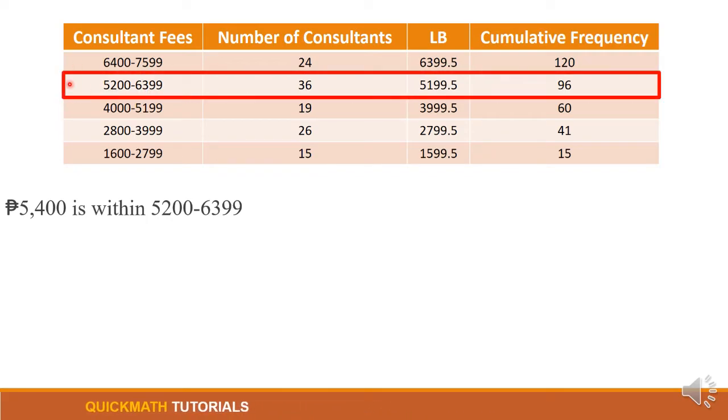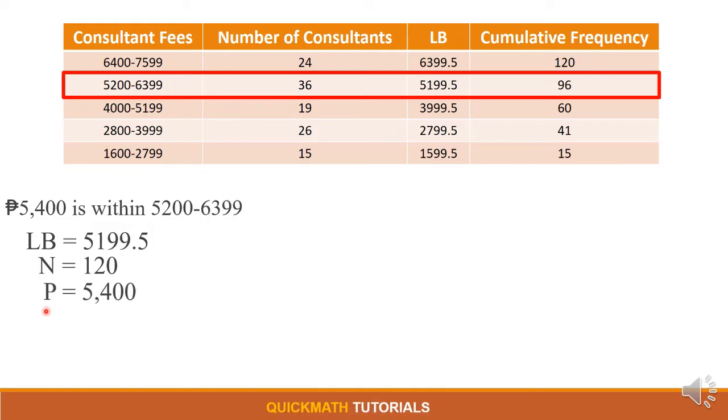So our LB here is 5,199.5, our N or the total of this frequency we have 120, or we can look at it here. And our raw score is 5,400, and our cumulative frequency which is 60, and our frequency which is equal to 36. And our interval is 1,200. Again, so we can get 1,200 by subtracting 6,399 minus 5,199.